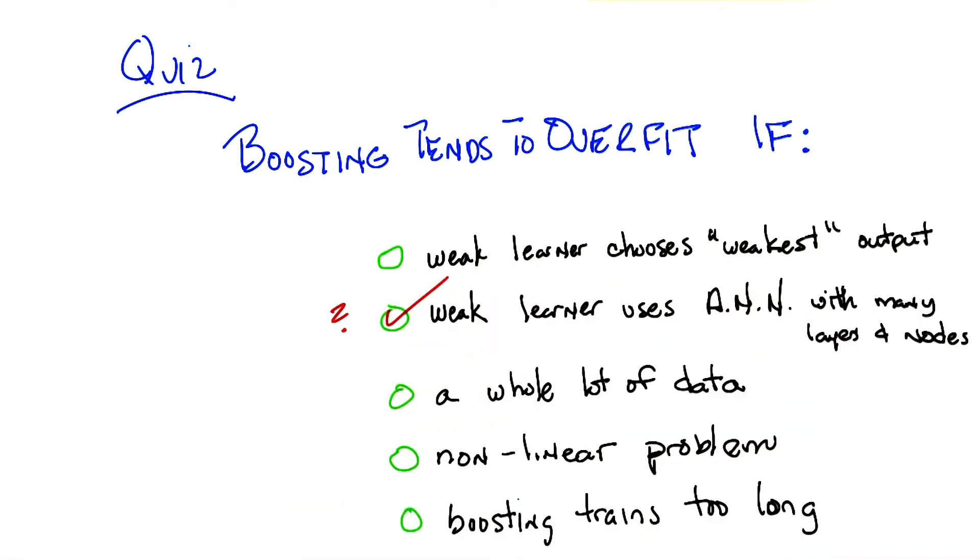So let me give you an example of when that would be correct. Let's imagine I have a big powerful neural network that can represent any arbitrary function. Got lots of layers, lots of nodes. So boosting calls it, and it perfectly fits the training data, but of course overfits. Then it returns and it's got no error, which means all of the examples will have equal weight.